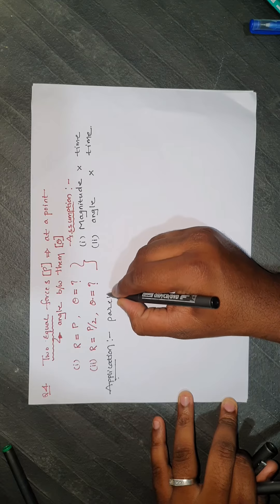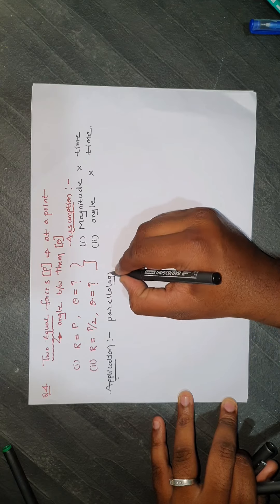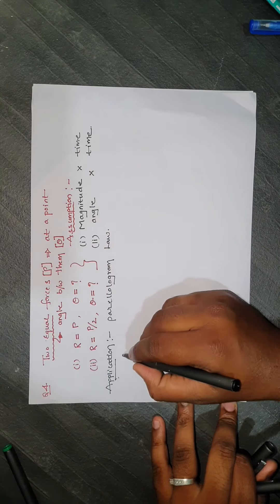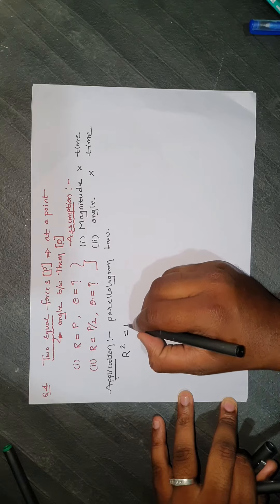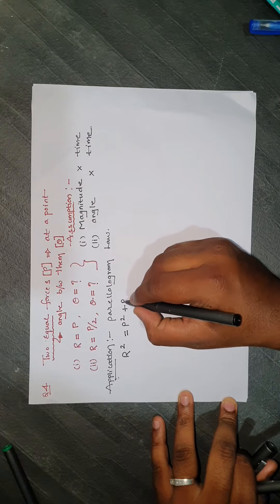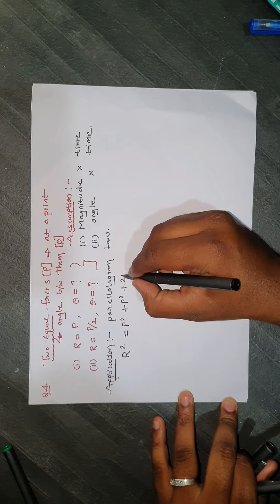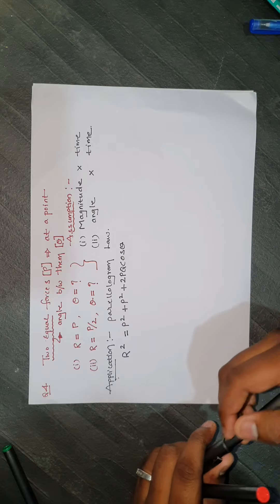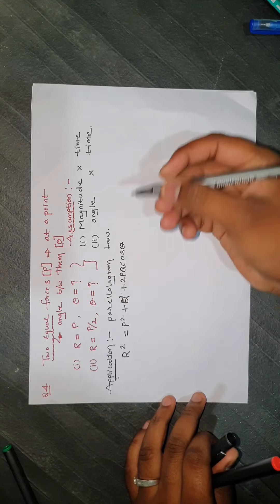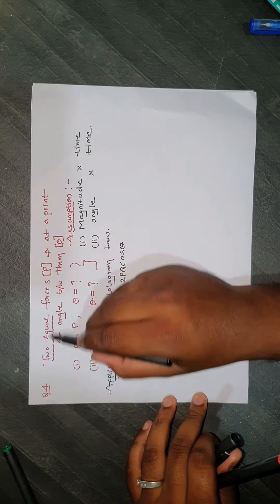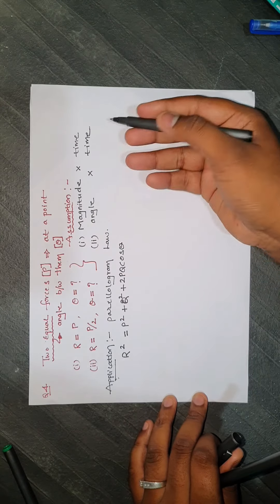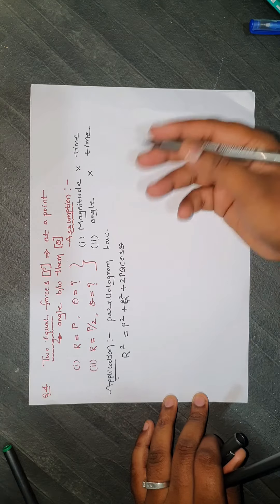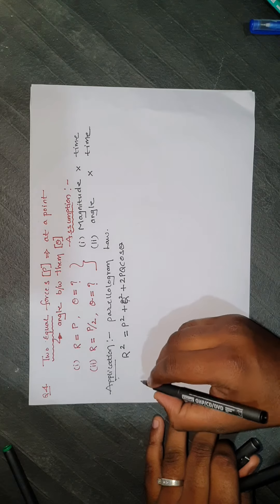According to the parallelogram law: R² = P² + P² + 2·P·P·cosθ. Since both forces are equal in magnitude P, this becomes R² = P² + P² + 2P²cosθ.